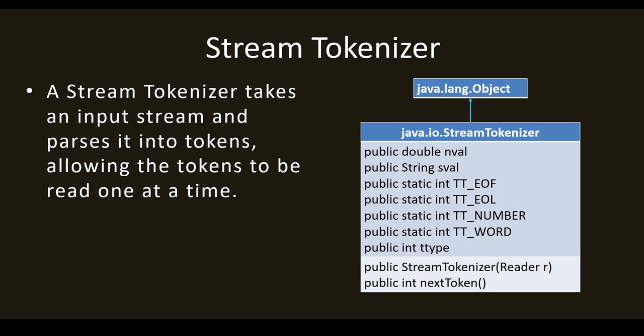Once it reaches the end of the file it returns minus 1, and then you stop the program. Other fields include TT_EOL (end of line), TT_NUMBER (checks for a number), TT_WORD (checks for a word, i.e., a string), and ttype (what type of token it is). For methods, you can see the stream tokenizer constructor taking a Reader object, and the nextToken method — same as in string tokenizer, you use nextToken here as well.